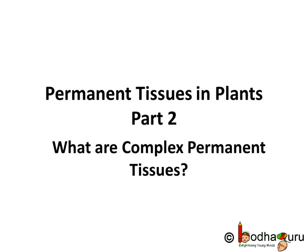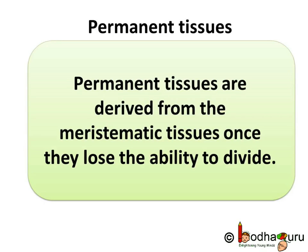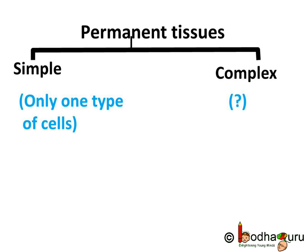Good morning everyone. We already know about permanent tissues, which are derived from meristematic tissues once they lose the ability to divide. Broadly, the permanent tissues in plants are of two types: simple permanent tissues and complex permanent tissues.